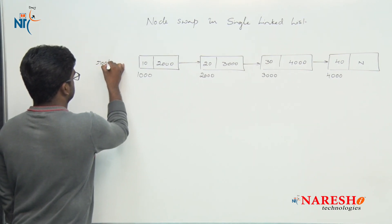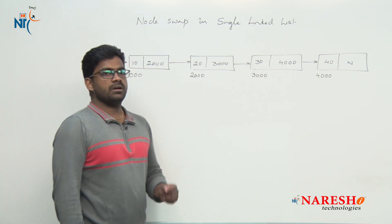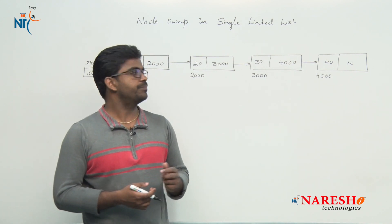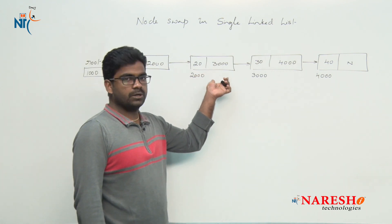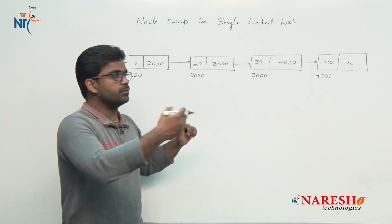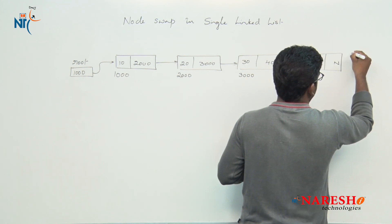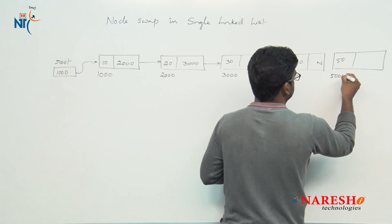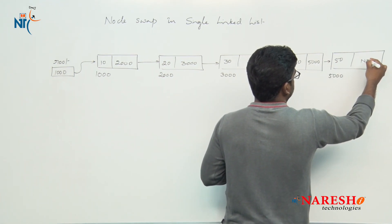Root is holding address 1000 and is pointing. Now I want to do adjacency node swapping only. We have to specify the location — for example, I want to swap the second and third node, or the third and fourth node. To understand clearly, let's take one extra node with value 50 at address 5000, and the last node link is null.